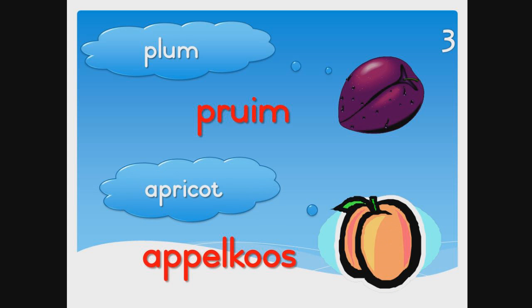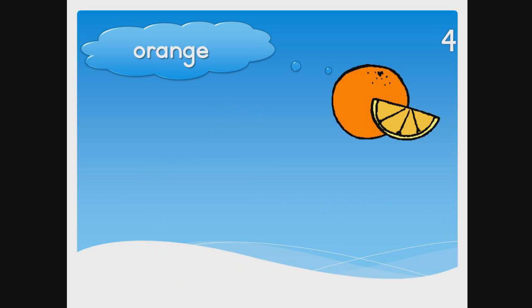Apricot — appelkoos, appelkoos, appelkoos. Orange — limoen, limoen, limoen.